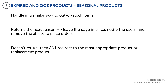Let's see how you can handle seasonal products. If the product is seasonal, handle it in a similar way to out-of-stock items. If it will return the next season, leave the page in place, notify the users, and remove the ability to place orders. If it won't return, then 301 redirect to another variation of the product — for example, the same product in a different color — or redirect to a replacement product.